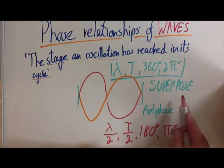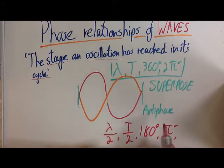So this is two waves that have superposed anti-phase because they are out of phase by half a wavelength or half a time period or 180 degrees or pi radians.